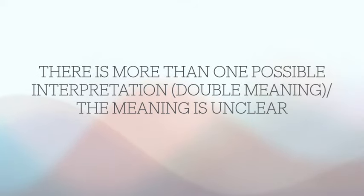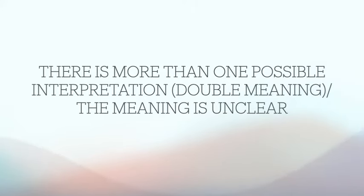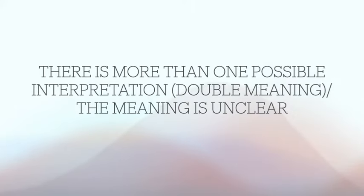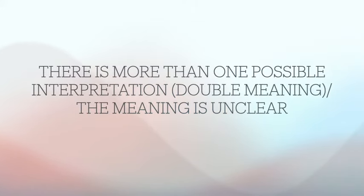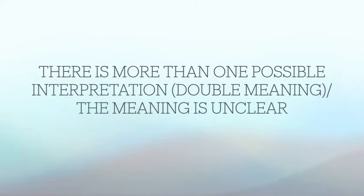There are various kinds of ambiguity. We're not going to delve too deeply into the details of the different kinds, but rather we're going to focus on some examples and how to correct them. Ambiguity is when there is more than one possible interpretation — there is a double meaning or the meaning is unclear. This can refer to one particular word that has two potential meanings, or it can refer to the construction of the sentence itself.